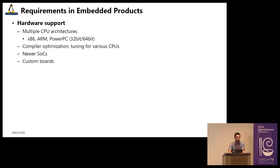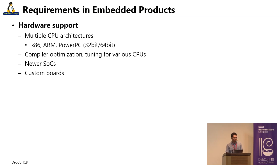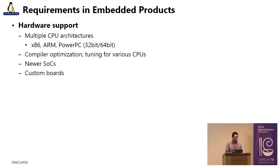So actually, what are the requirements in our products? The first thing is hardware support. For example, x86, ARM, and PowerPC for both 32-bit and 64-bit are required. Some customers require tuning for specific CPUs to improve system performance. Our development cycle is sometimes long, so we usually need to use a newer SoC at the beginning of development. Our product developers also add their own hardware or some I/Os into the board, and we usually need to develop some drivers or update the memory map information.